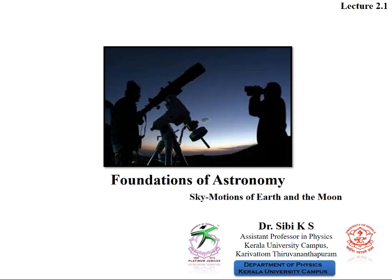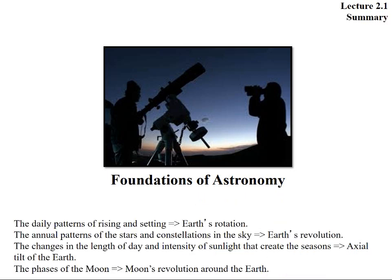So coming to today's class, we are going to discuss about the sky. The daily patterns of rising and setting are due to Earth's rotation. The annual patterns of stars and constellations in the sky are due to Earth's revolution. The changes in length of day and intensity of light that creates the seasons are due to axial tilt of the Earth. The phases of the moon are due to moon's revolution around the Earth. These are the main points I am going to cover.